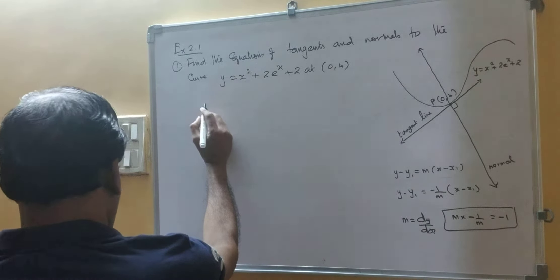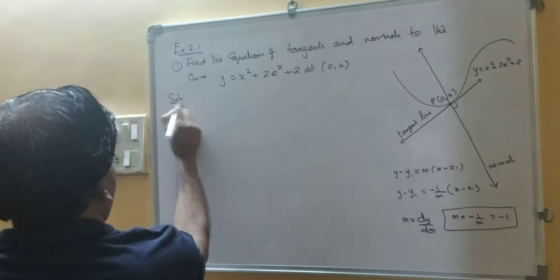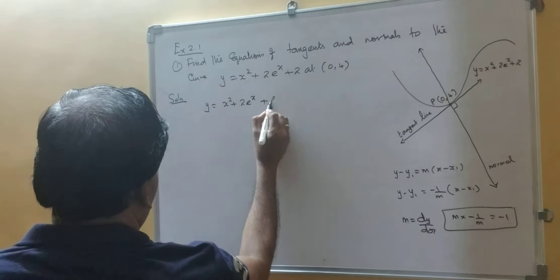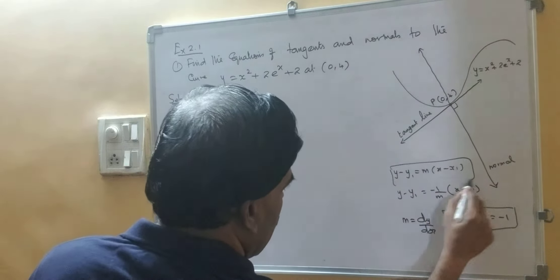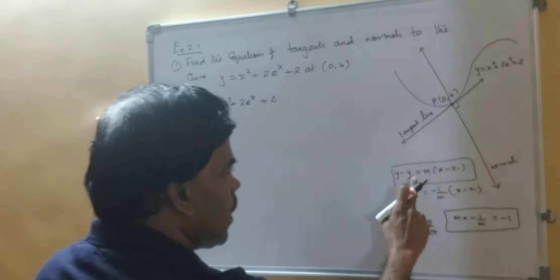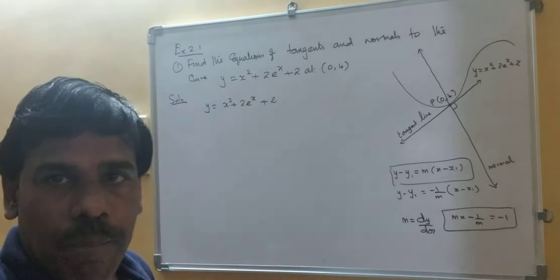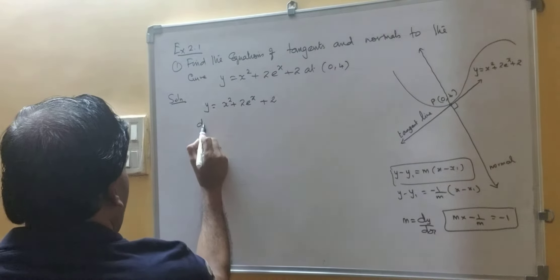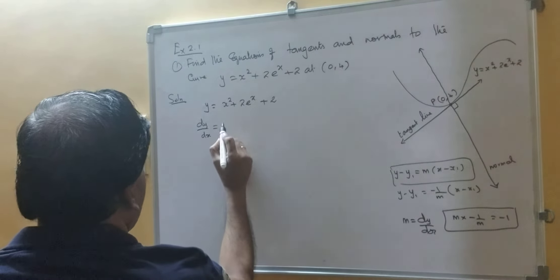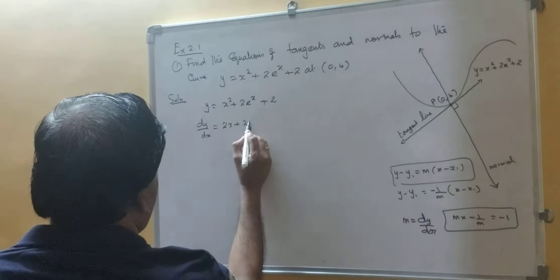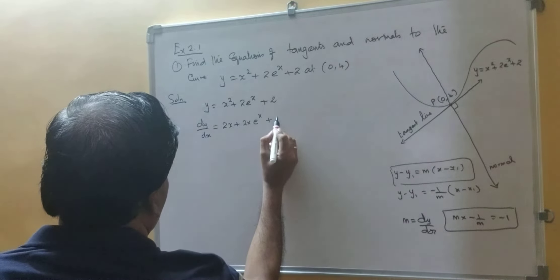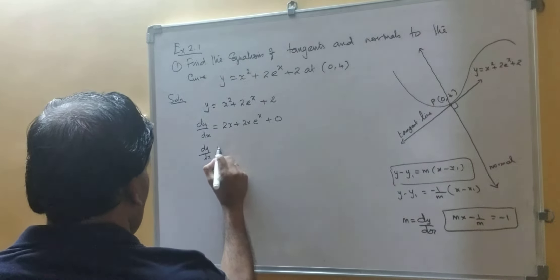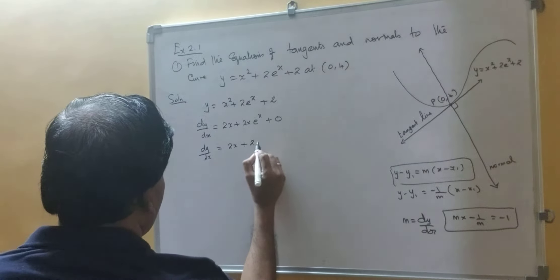Solution. Given y equal to x square plus 2 into e to the power x plus 2. What is x1 and y1? From the point 0 comma 4, x1 is 0 and y1 is 4. We need to find the value of m, that is the slope. So dy by dx: derivative of x square is 2x, derivative of e raised to x is e raised to x, derivative of 2 is 0. Therefore dy by dx equal to 2x plus 2 into e to the power x.